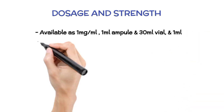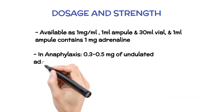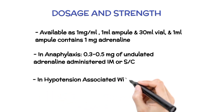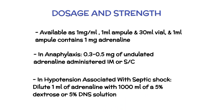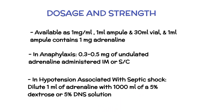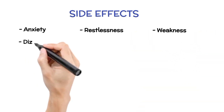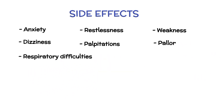Dosage and Strength: Available as 1 mg per ml; a 1 ml ampoule contains 1 mg of adrenaline. In anaphylaxis, 0.3–0.5 mg of undiluted adrenaline is administered intramuscular or subcutaneous in the interlateral aspect of the thigh, with a maximum of 0.5 mg per injection, repeated every 5–10 minutes as necessary. In hypotension associated with septic shock, dilute 1 ml of adrenaline with 1,000 ml of dextrose or 5% DNS solution to produce a 1 mcg per ml concentration.